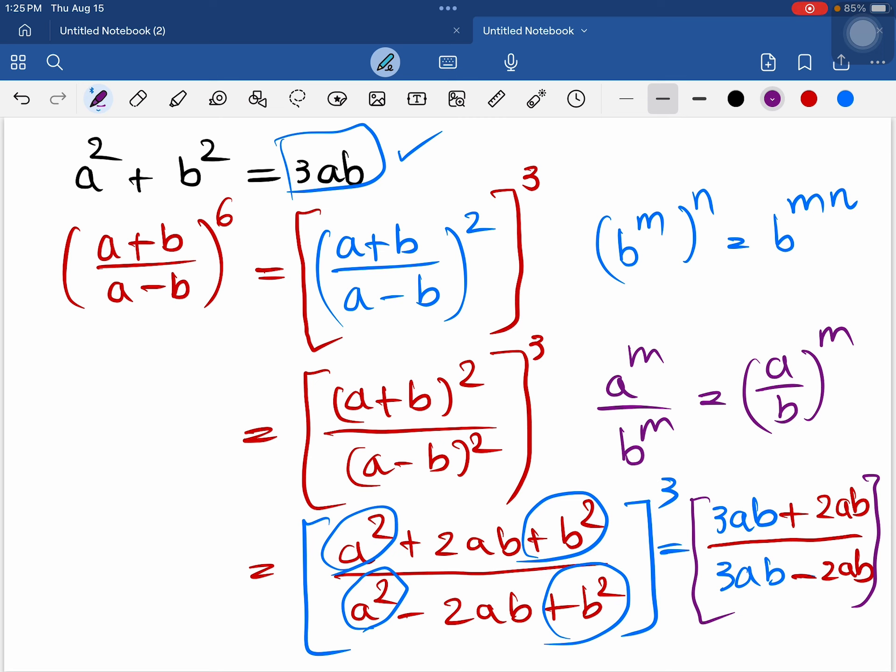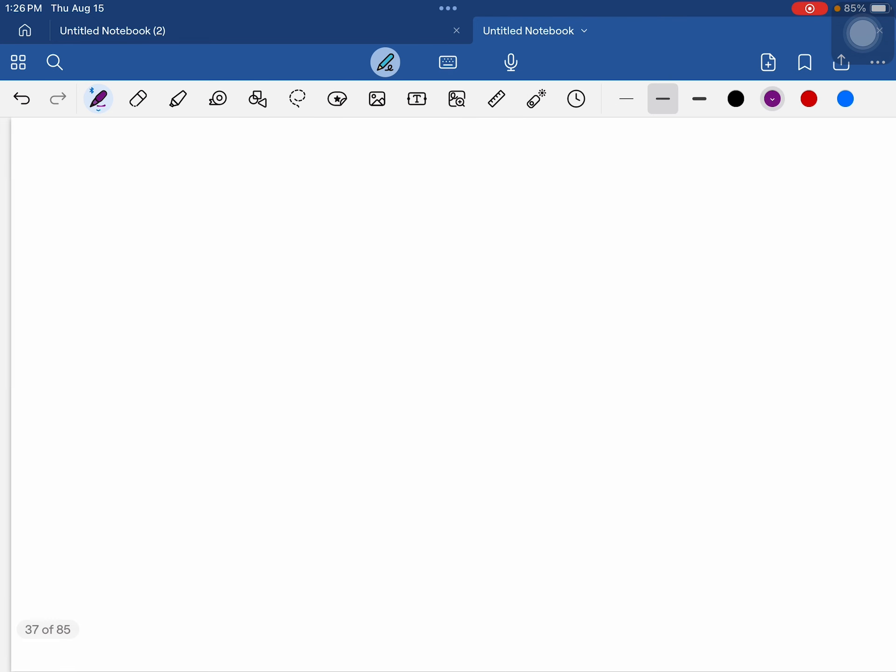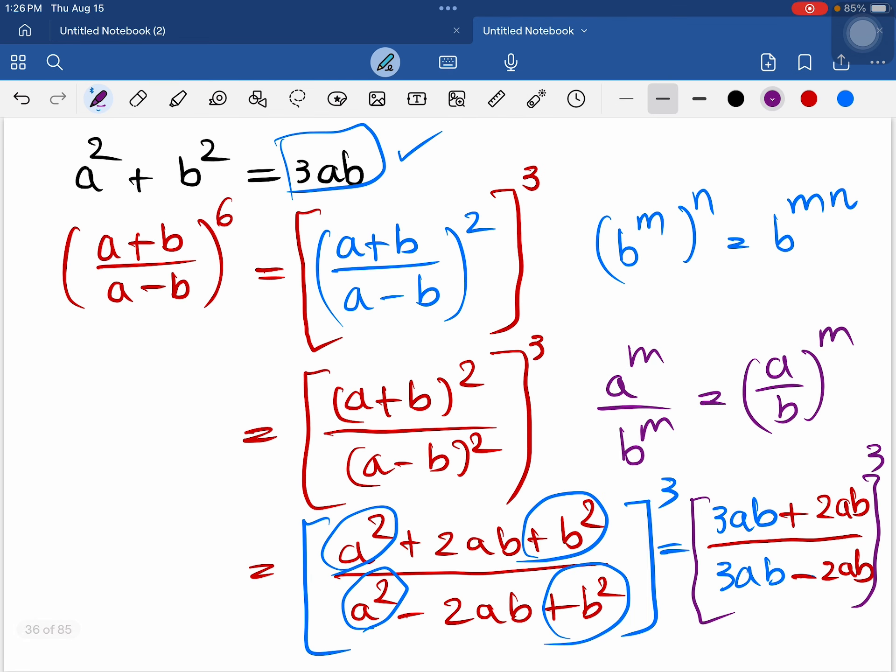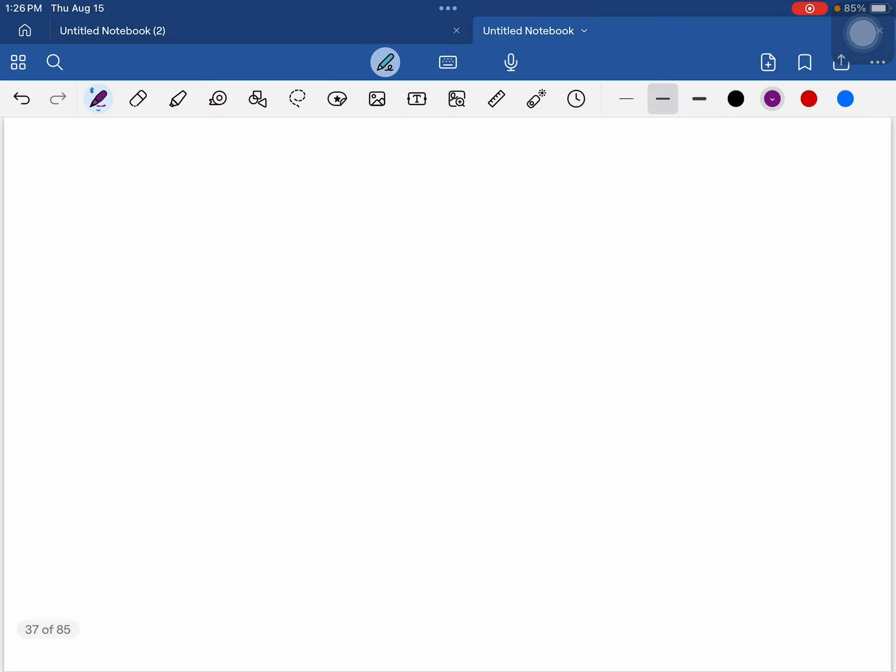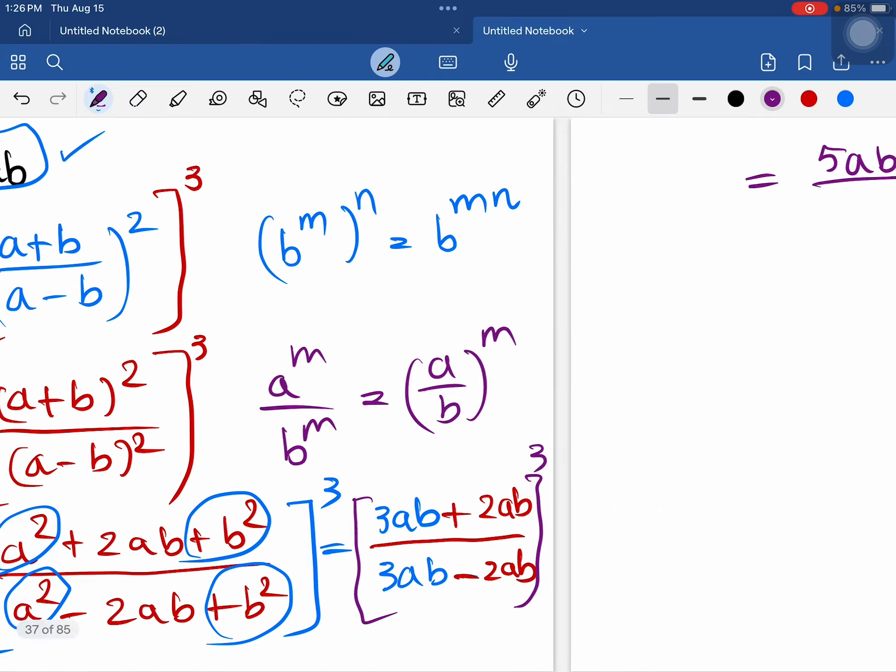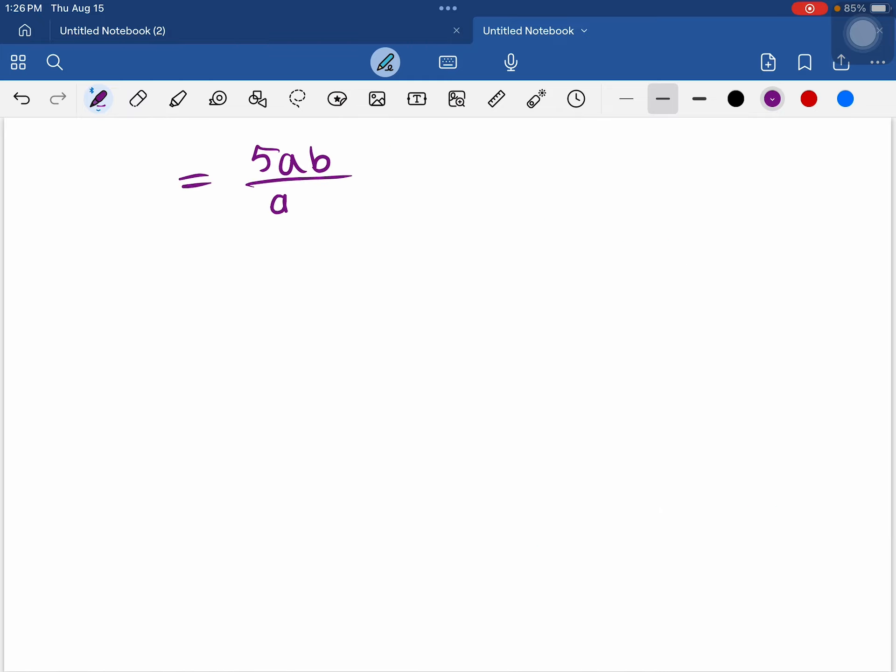3ab plus 2ab is equal to 5ab, divided by 3ab minus 2ab equal to 1ab, so ab.